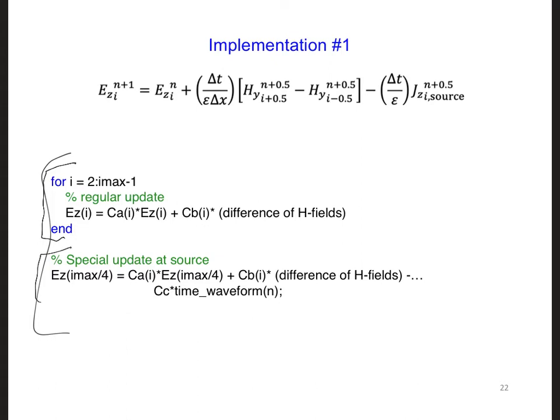And then after that, we have a special update at the source, which includes all of the terms that we just developed. The problem with this implementation is that the EZ field at the source has a double update. It's being updated in the regular update, since we're cycling through all the i's. And then it's being updated again here.